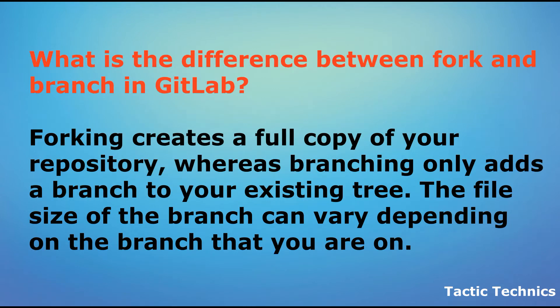What is the difference between fork and branch in GitLab? Forking creates a full copy of your repository, whereas branching only adds a branch to your existing tree. The file size of the branch can vary depending on the branch that you're on.